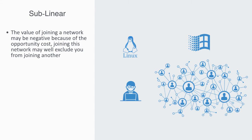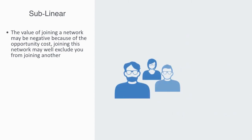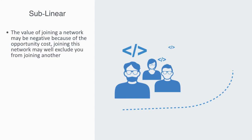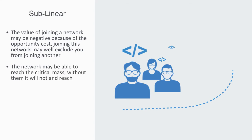These early adopters are typically special interest users — what we might call geeks — that particularly care about this service and are prepared to pay the opportunity cost. Thus, it is these early enthusiasts that really matter. Because with them, your network may be able to reach the critical mass. Without them, you will not. And reaching this critical mass, beyond which the network effect will take hold, is the key factor in the early formation of the network.